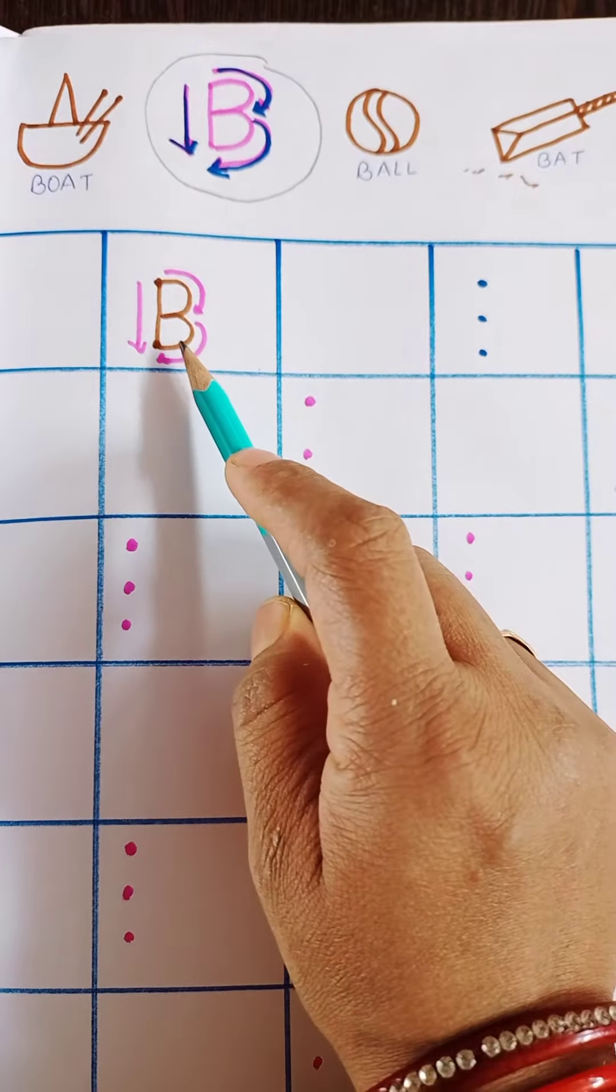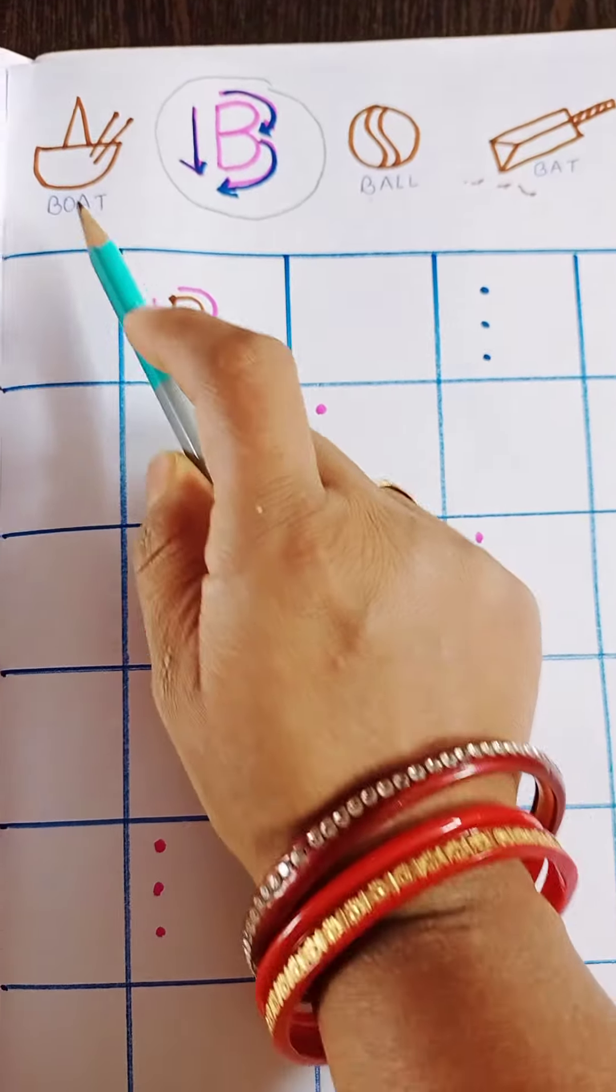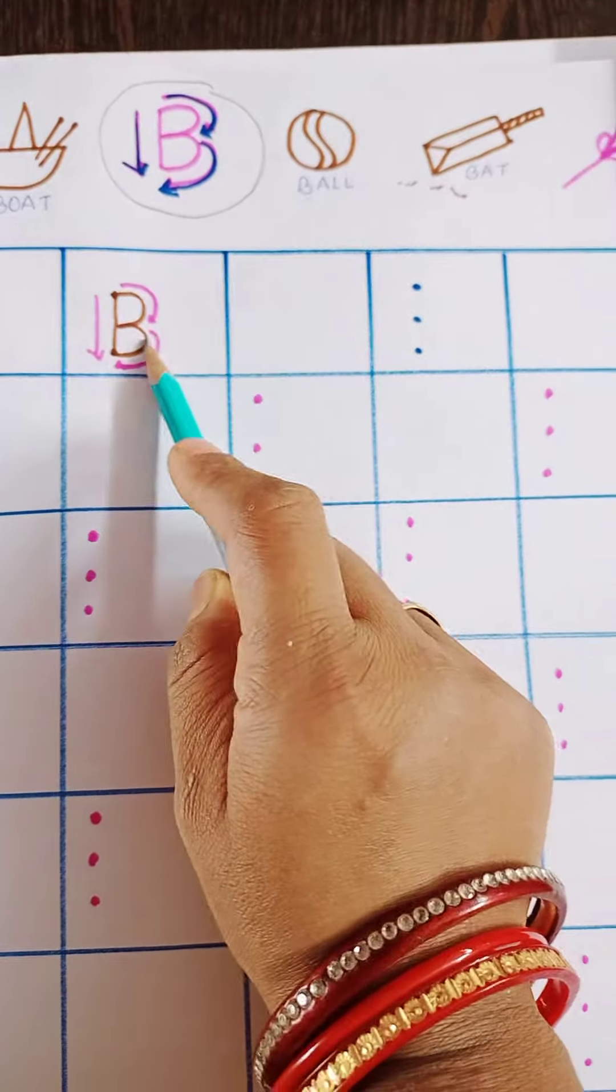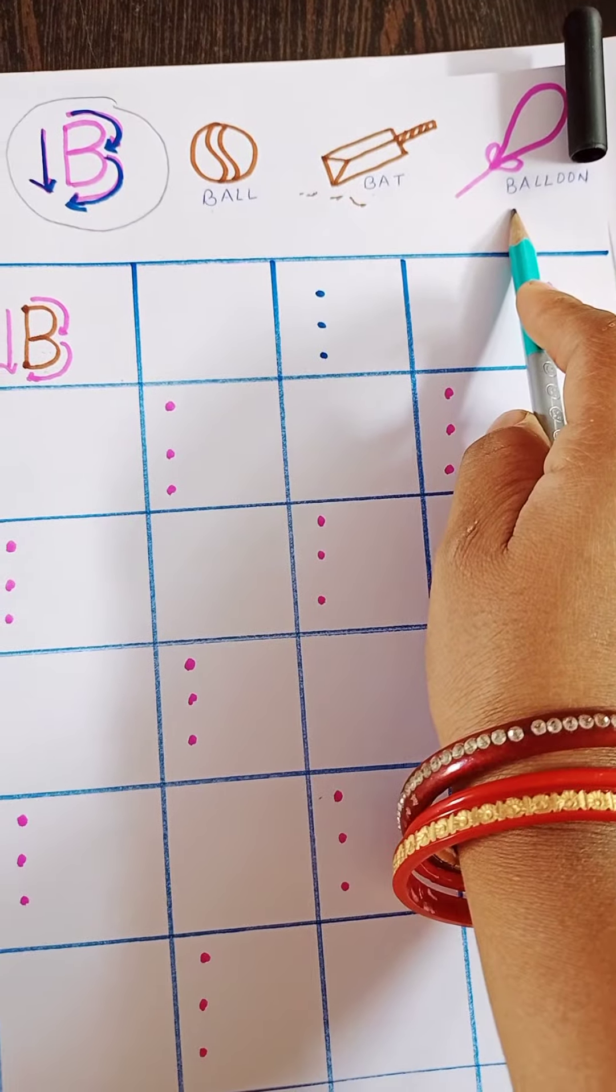Now what is this? This is B, B ball, B boat, B bat, B balloon.